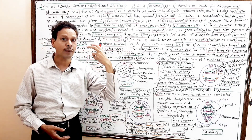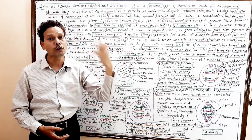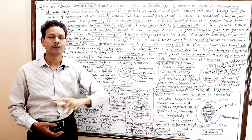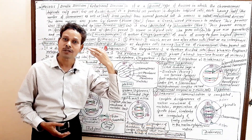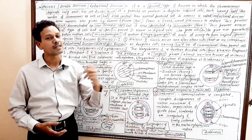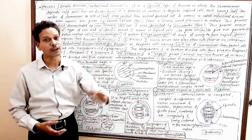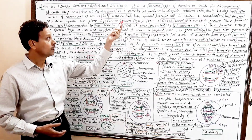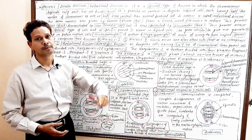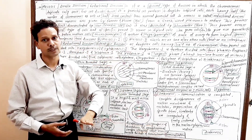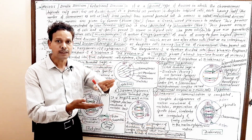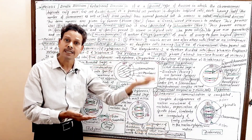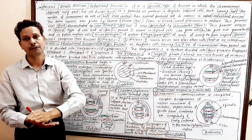Diploid cells have two sets of chromosomes from two parents. In the case of the human body, we have two sets of chromosomes: one set from our mother — maternal chromosomes — and another set from our father — paternal chromosomes. The chromosome number as well as the DNA content is reduced to half, giving four haploid daughter cells.